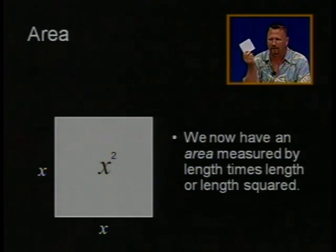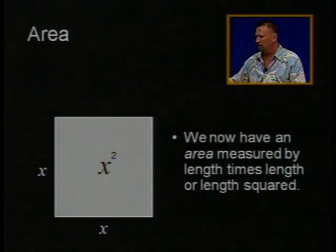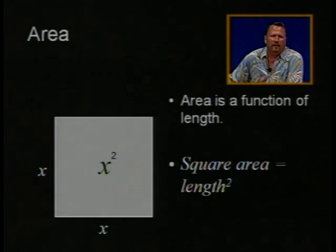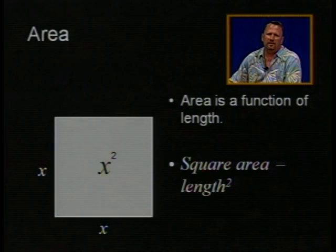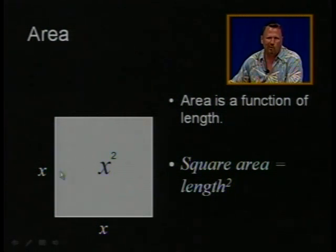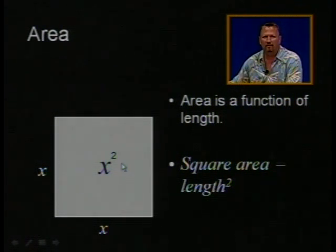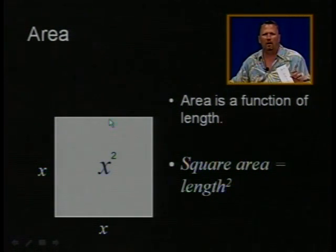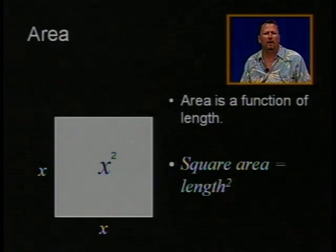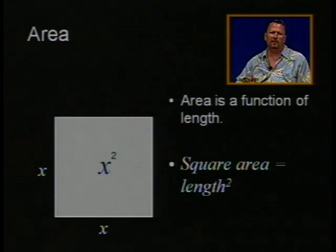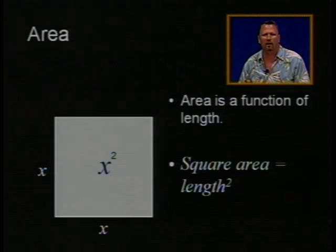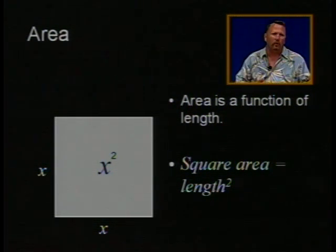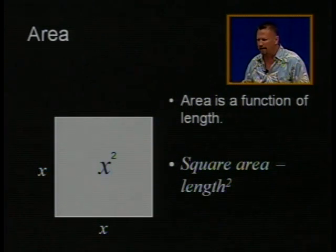This is my little 10 by 10 centimeter square. Area is a function of length — square area equals the length squared. If you have a square and you measure one side and the other side and multiply them together, you have a square area. You can take a rectangle, measure one side, measure the other side, multiply them, and that gives you the area — in terms of whatever unit you used, squared. So square inches, square centimeters, square millimeters, square meters — it doesn't matter.